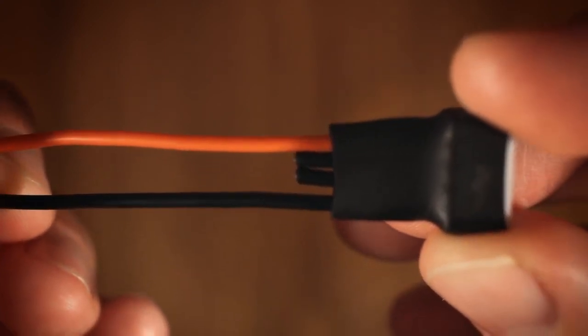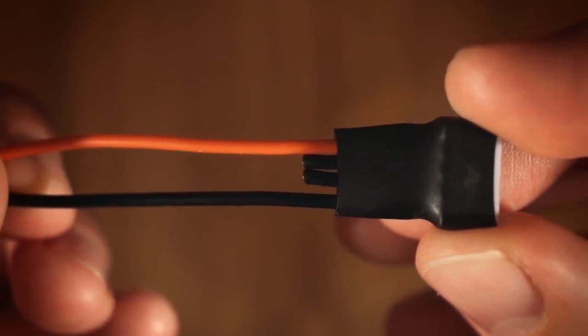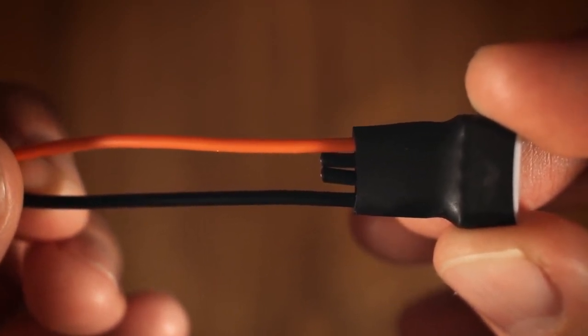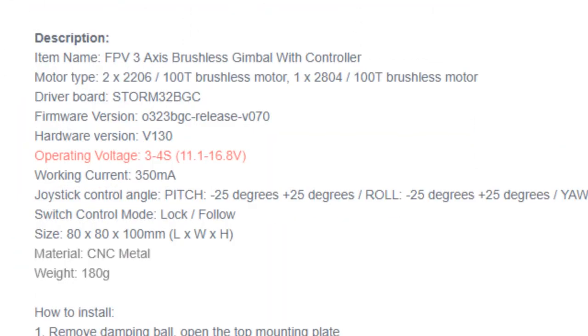By using the outermost wires and cutting the others off to not make connection with each other or something else, it's possible to draw from all, in this case three cells of the battery. 3S means 11.1 volts nominal voltage which lies within the operating range of this gimbal.